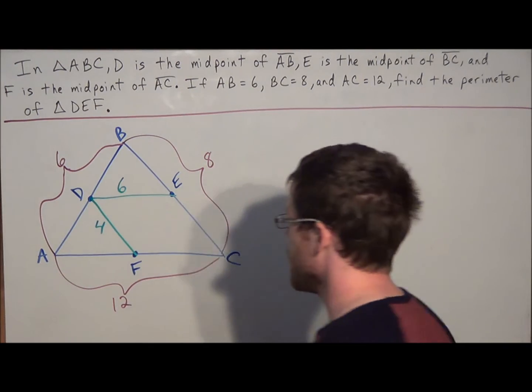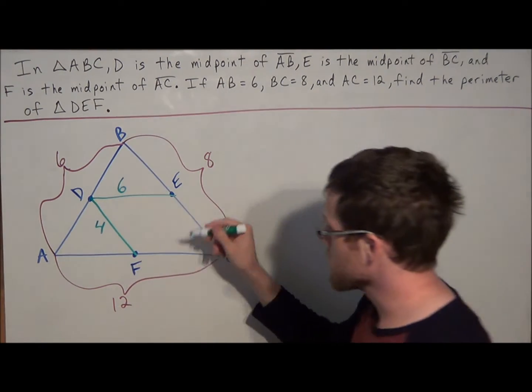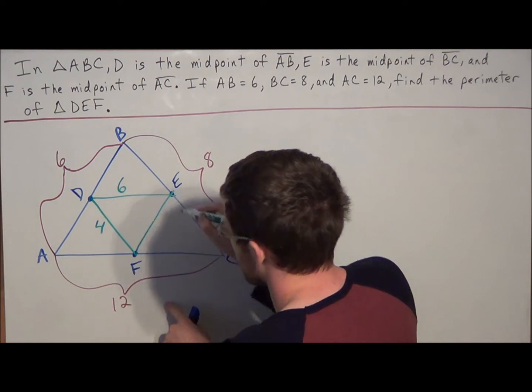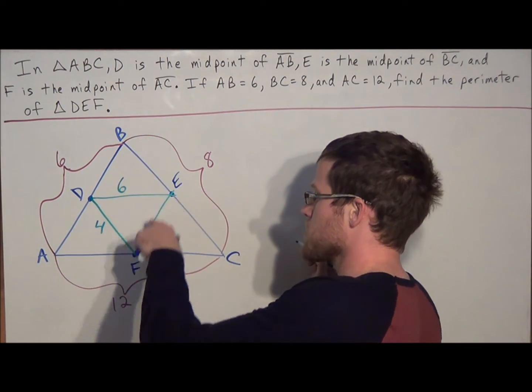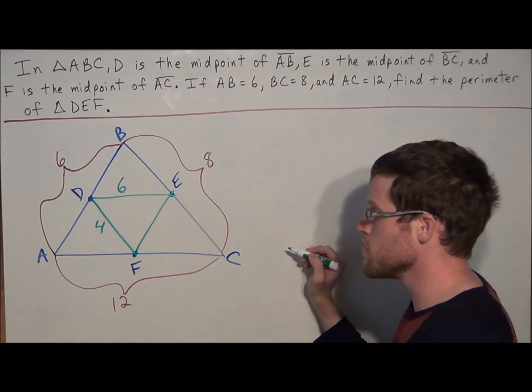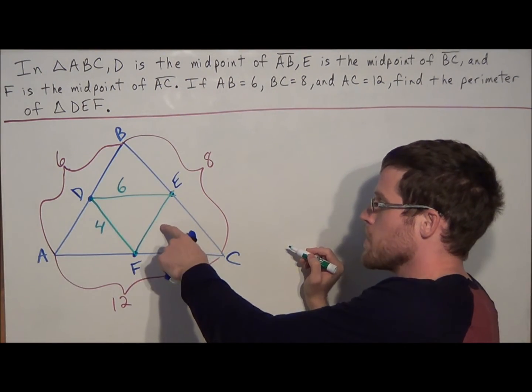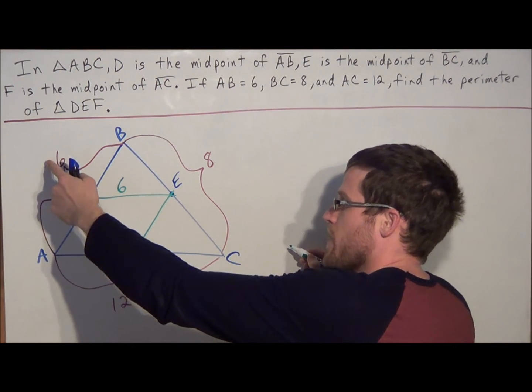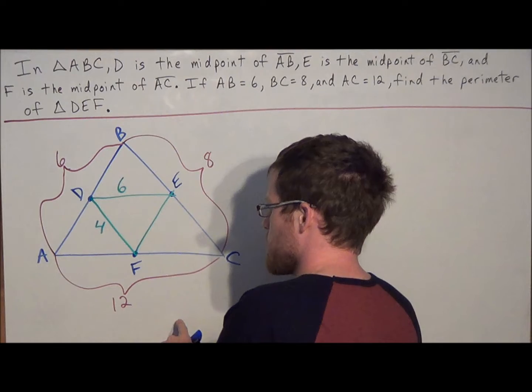We're just doing 8 divided by 2 is 4. And now we do this once more, so notice now we're going to be connecting F to E. This segment is going to be parallel to AB, and from our theorem, we know that this segment has to be half the measure of side AB. So if AB is 6, we do 6 divided by 2 is 3, and that tells us the length of FE.